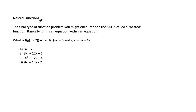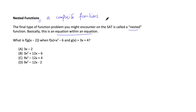Lastly, we have nested functions, also called composite functions. The final type of function problem on the SAT is a nested function — essentially an equation within an equation. To understand this practically: years ago, offices had separate fax machines, printers, and scanners, but now all these functions are combined in one machine. That's a composite function — combining multiple inputs to get one output.